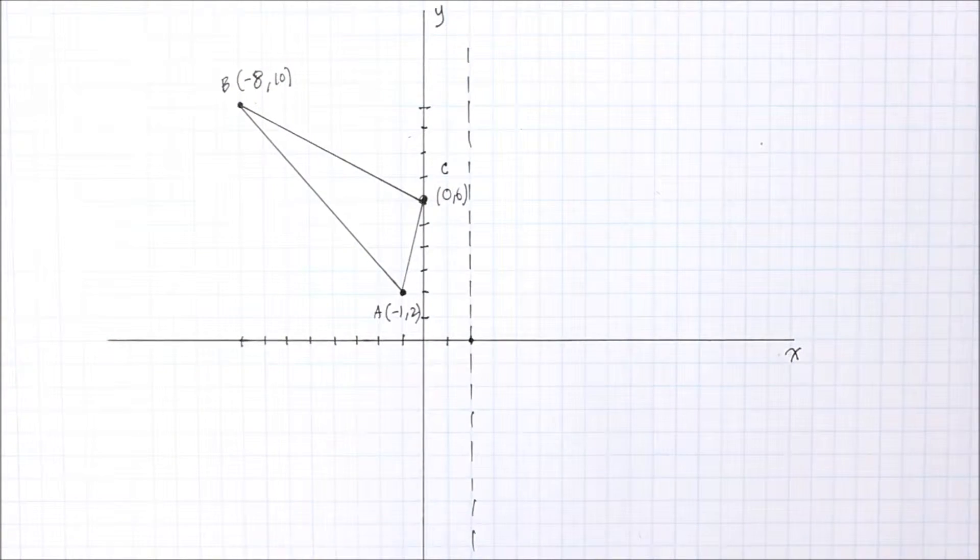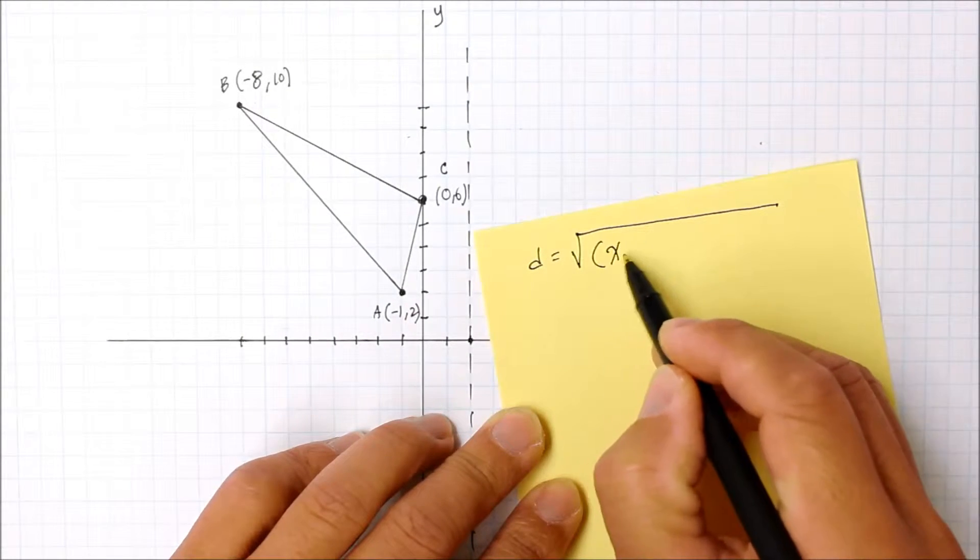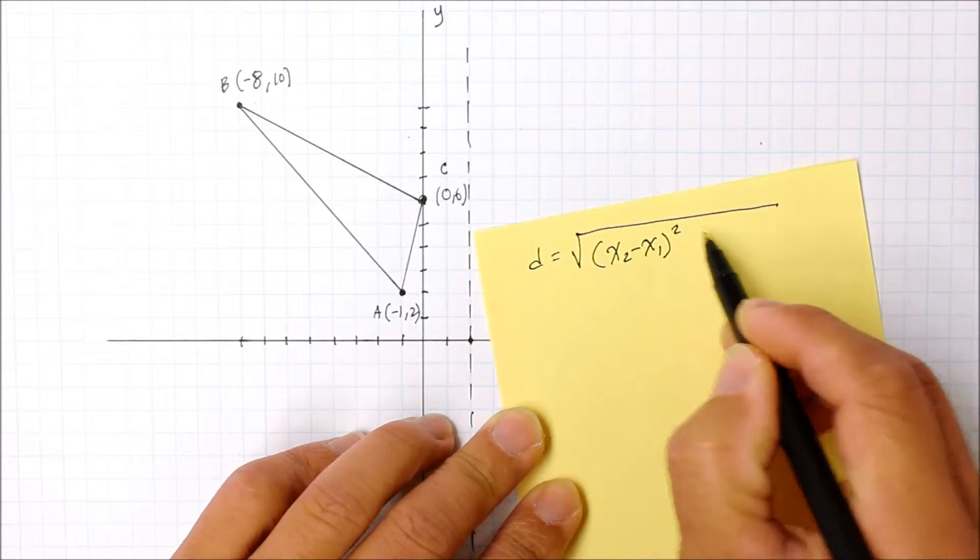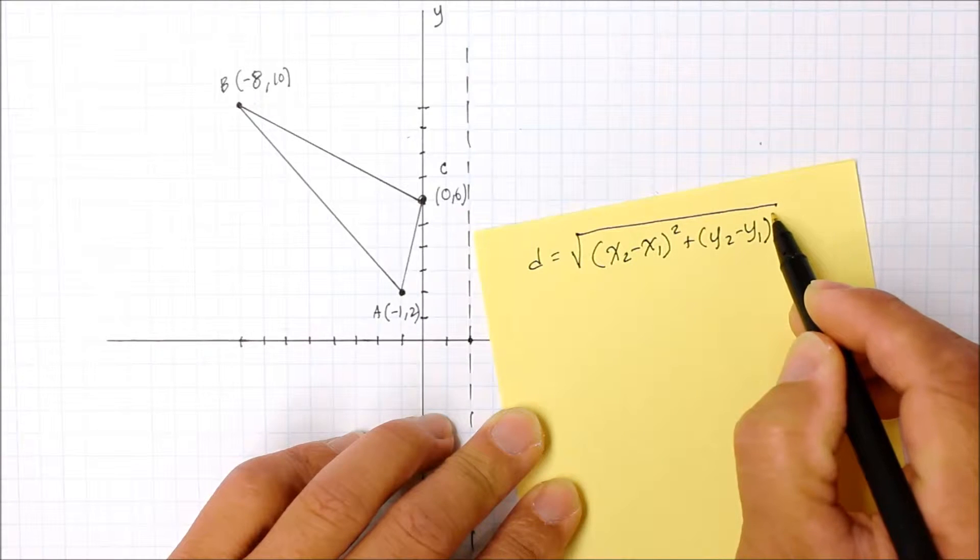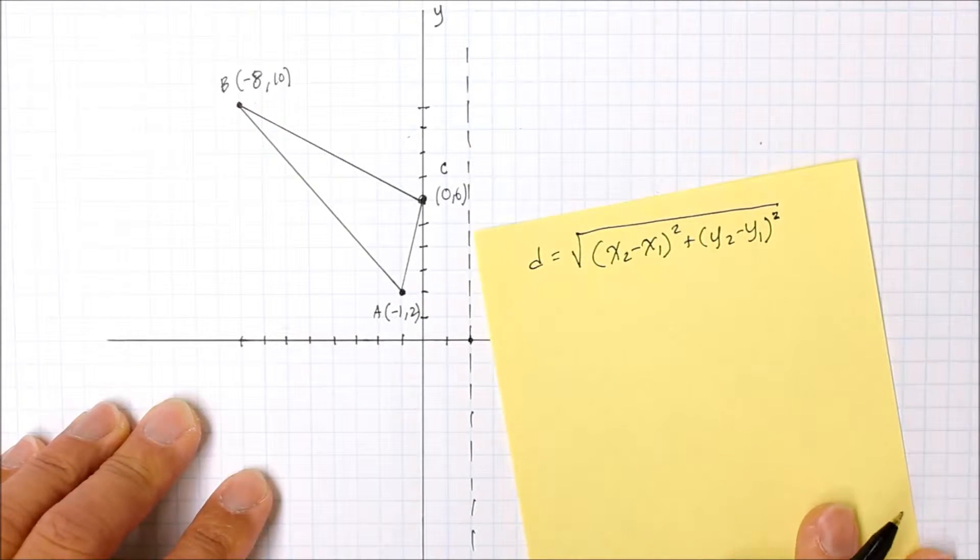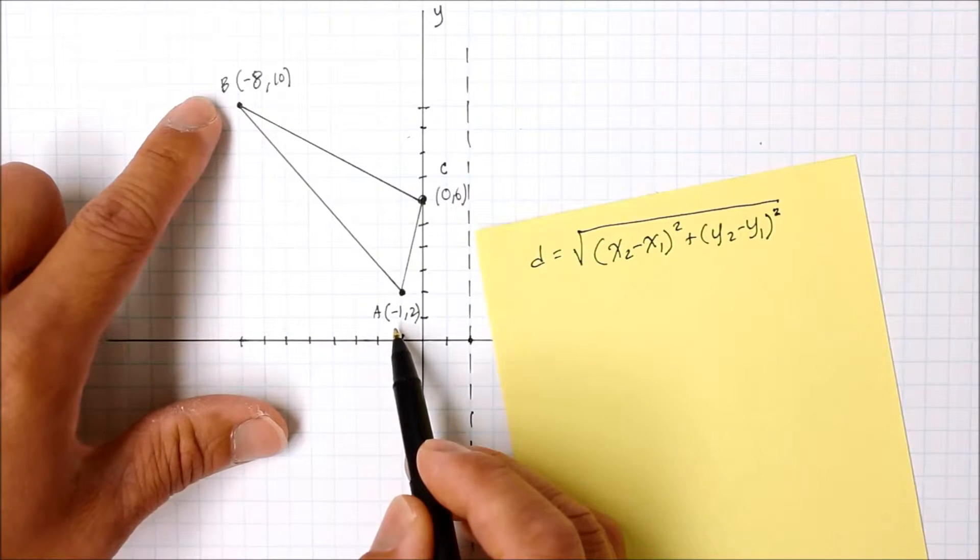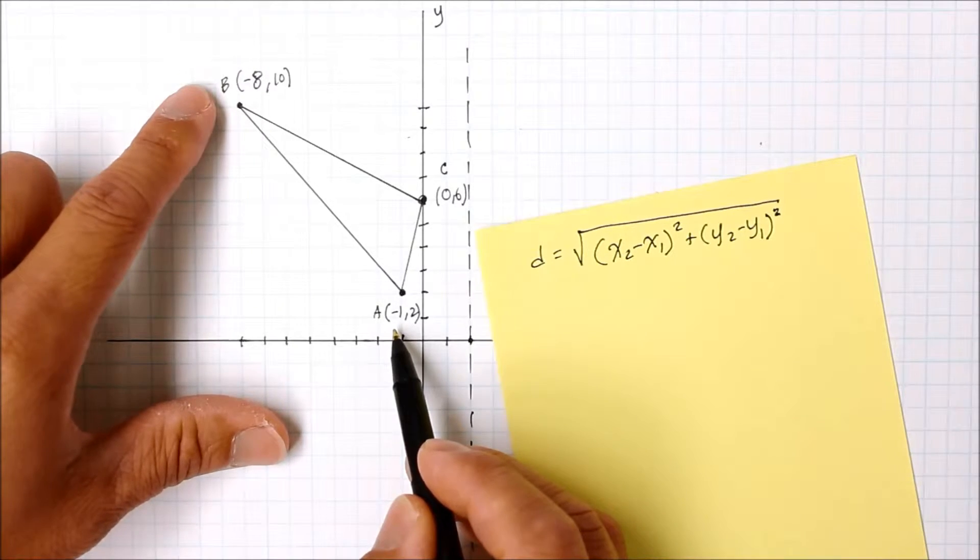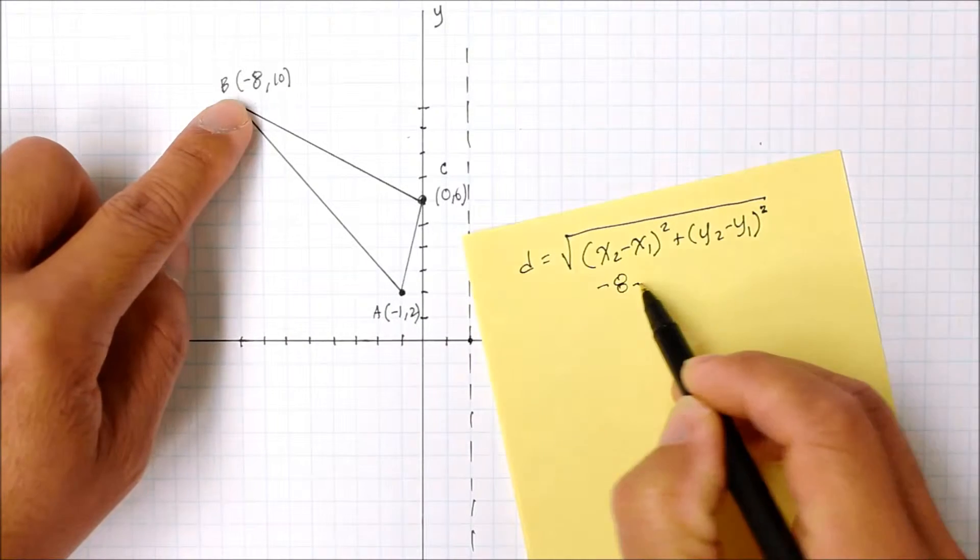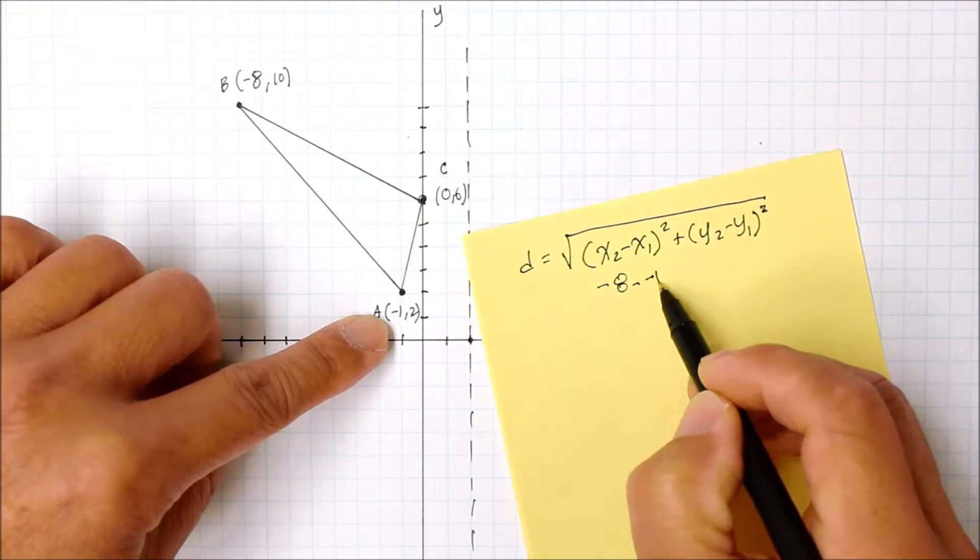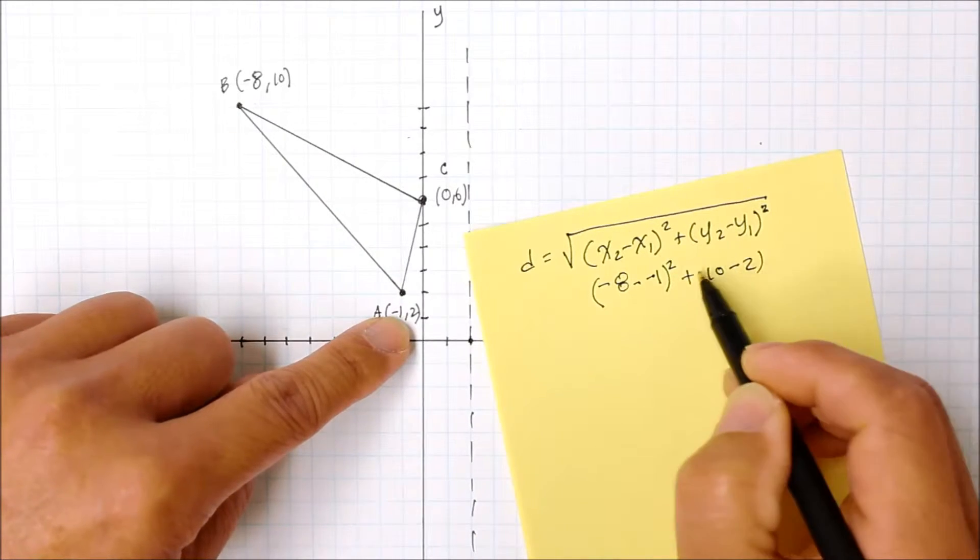First, the distance formula is d equals square root of x2 minus x1 squared plus y2 minus y1 squared. Let's label A as x1, y1, and B as x2, y2, the second coordinate pair. So x2 is negative 8 minus x1 which is negative 1, squared, plus y2 which is 10 minus y1 which is 2, squared.